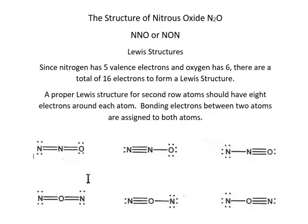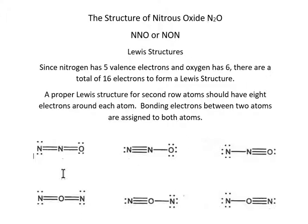Let's take a look at the NNO possibilities. There are three. You can see that each one of these has 16 electrons total. They all have 16 electrons and they all have an octet around each atom.